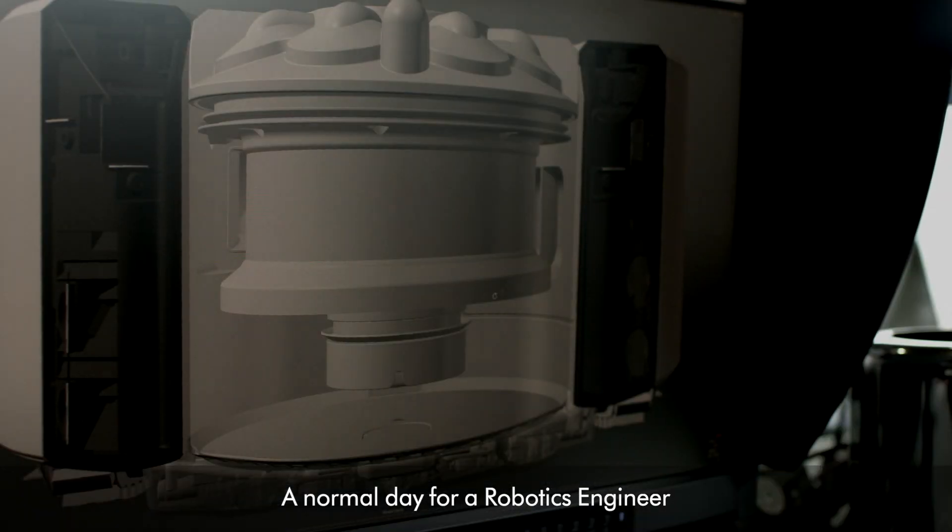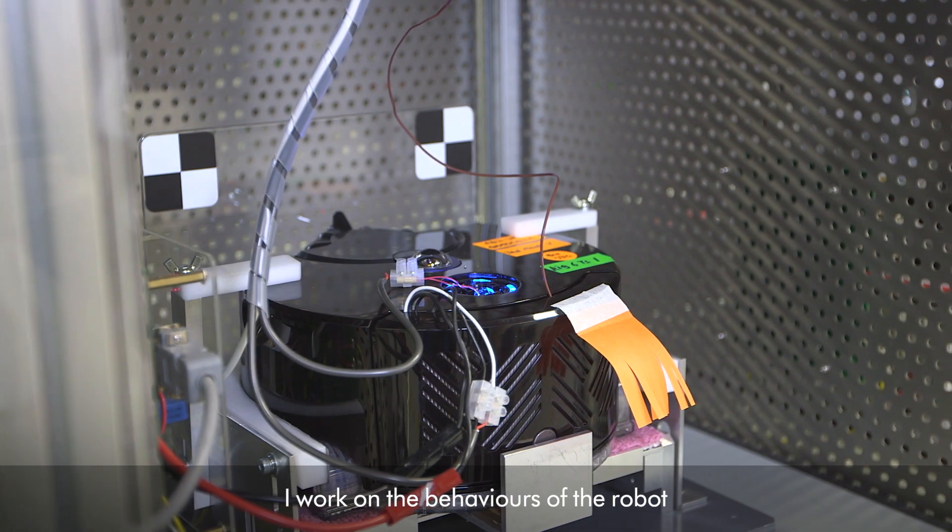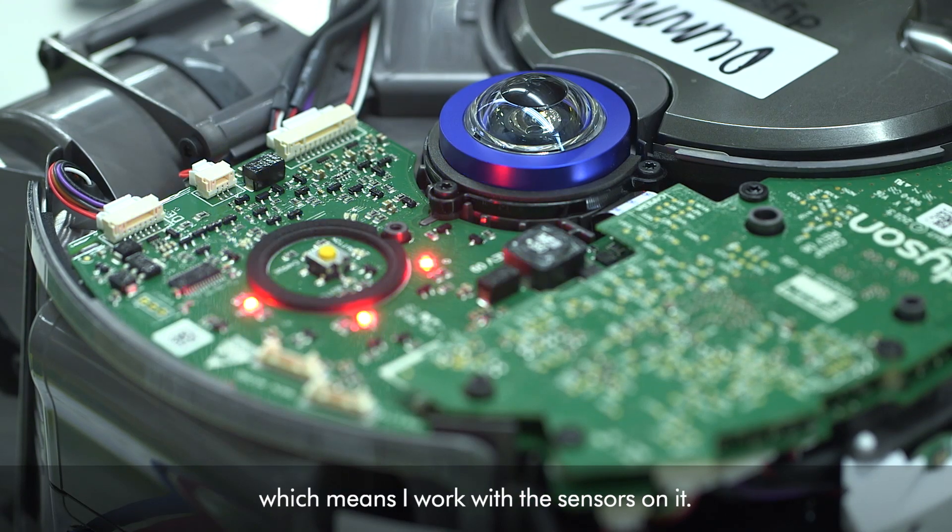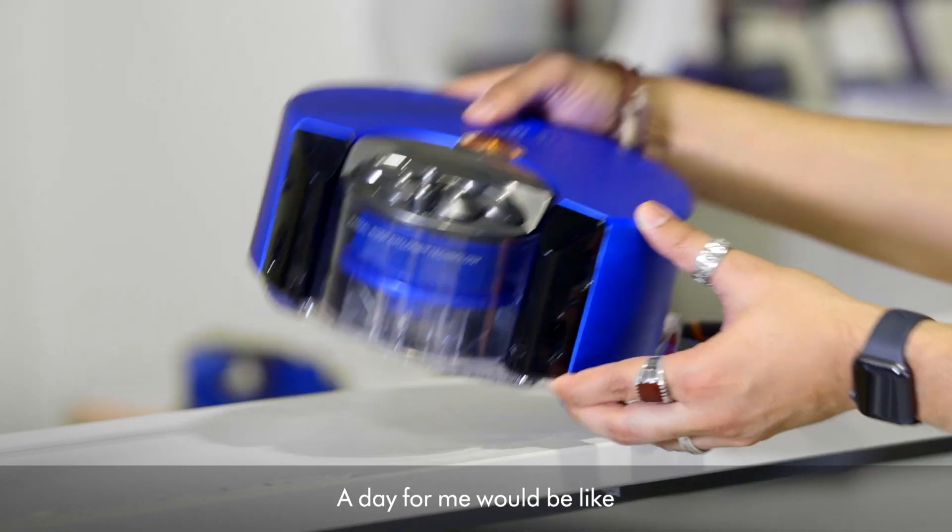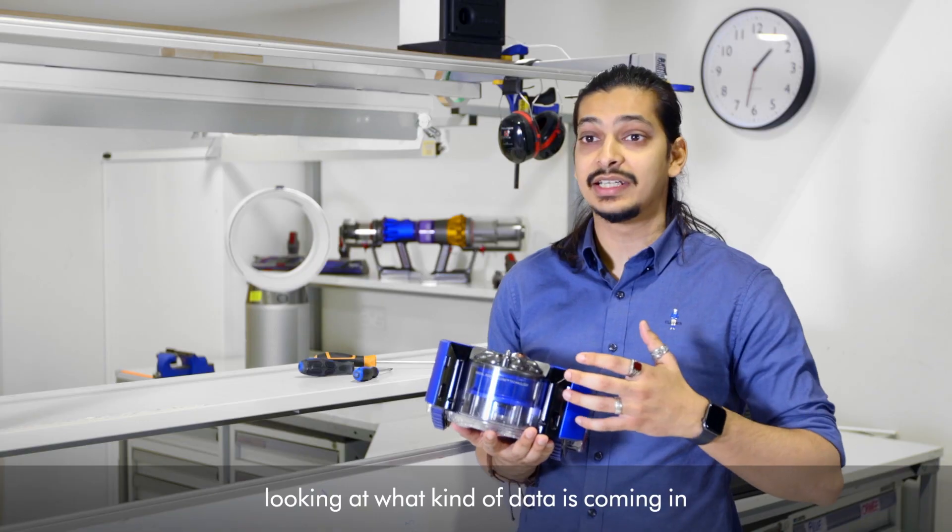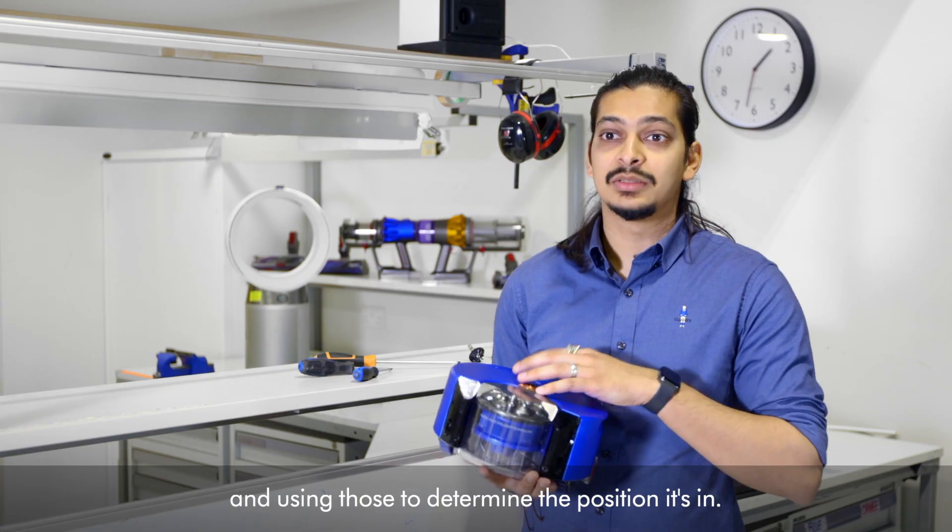A normal day for a robotics engineer can vary depending on what stage the product they're working on is. I work on the behaviors of the robot which means I work with the sensors on it. So we have a robot here. A day for me would be like looking at what kind of data is coming in from the various sensors and using those to determine the position it's in.